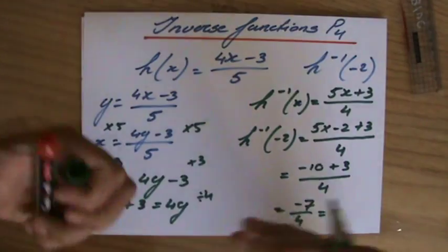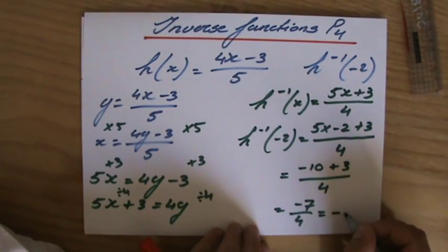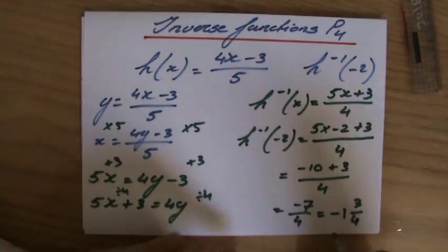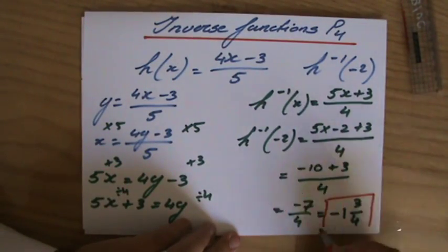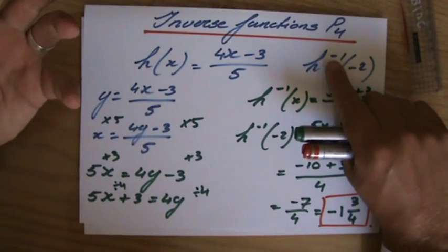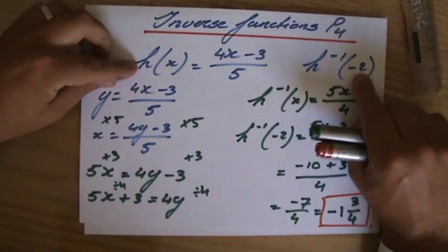Top heavy, improper. So turn it into a mixed number. 4 will fit in once, and my remainder is 3. So -1 and 3/4, which is the answer to this problem where I had to evaluate h^(-1)(-2).